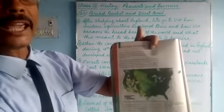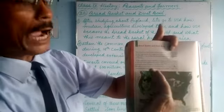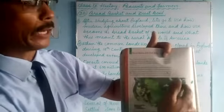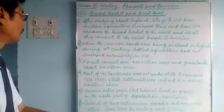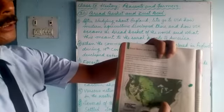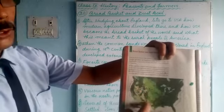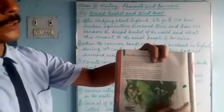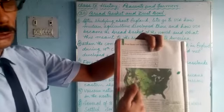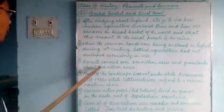Europeans came one after another like waves and settled there. The native people were pushed towards the western side and eventually had to move to rocky areas as this land was taken over by white people. The dark portion is thick forest cover, tall grass and short grass regions are visible, and the Rocky Mountains are on the western side with the Appalachian Mountains on the eastern side.